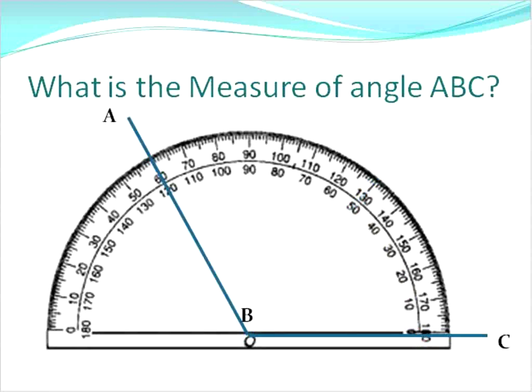If you have an obtuse angle like this one, now I have ABC, you start at zero and you move your way up 10, 20, 30, 40, 50, 60, 70, 80, 90. That would be a right angle. 100, 110, 120. This is an obtuse angle of 120 degrees. So that's how we measure using a protractor to measure our angles.